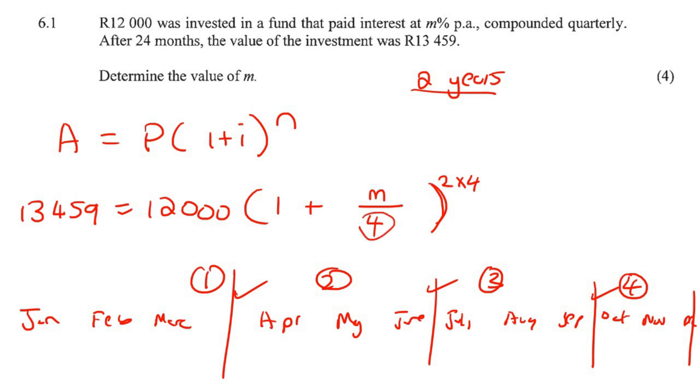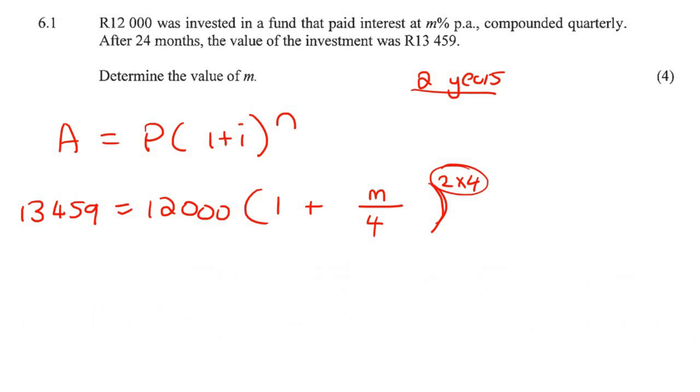So how many times would you compound altogether? Eight times. Okay? Now, to work this out, what we could do is divide by 12,000 first. And then that would just be an eight. The next thing we could do is take the eighth root on both sides. Okay?